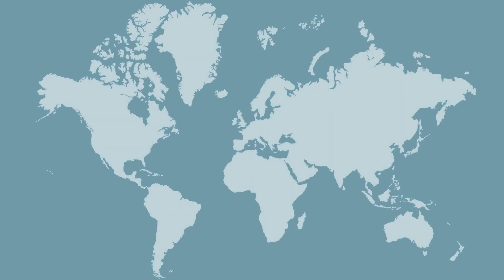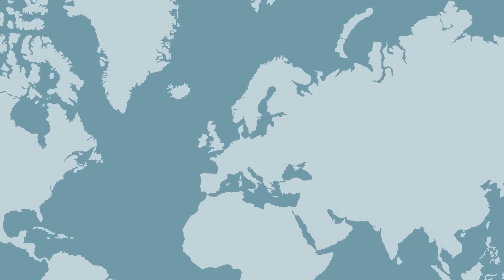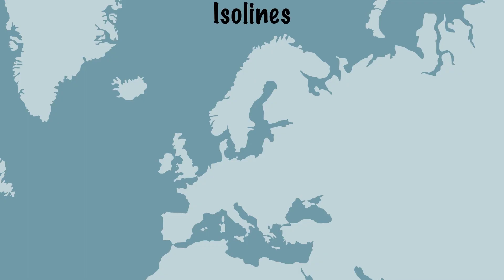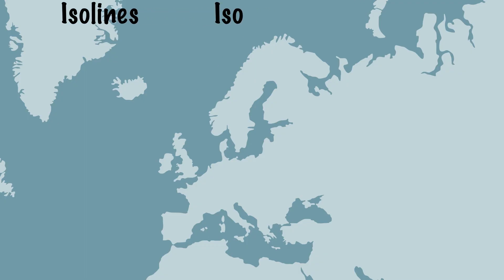We can also do this for air pressure. By connecting points on a map with the same air pressure we can see where the air pressure is lowest and highest. Air pressure is measured in bar, which is why ISO lines that show air pressure are called isobars.